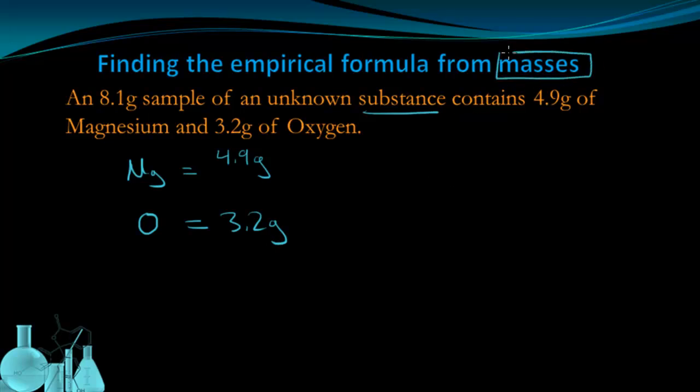I'm given the masses. I want to make this into moles, so I'm going to set up my conversion factors for dimensional analysis. I'm going to have grams of magnesium on the bottom and moles of magnesium on top because that's what I want to change to. From the periodic table, I know that 1 mole of magnesium is 24.3 grams of magnesium.